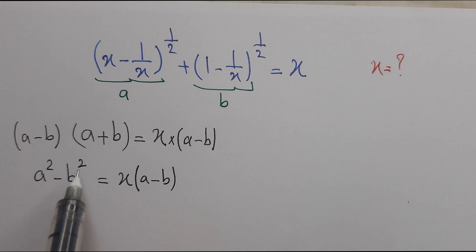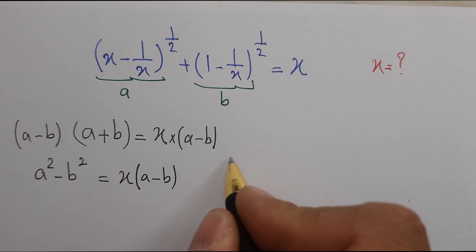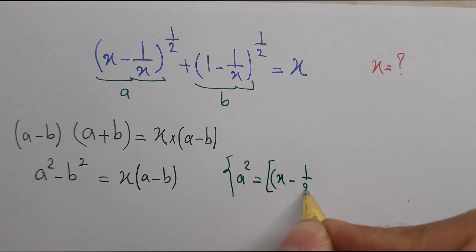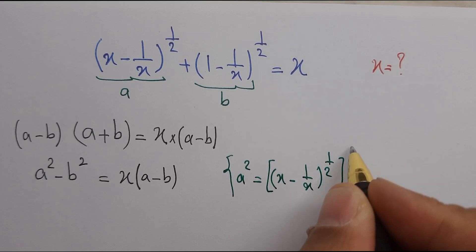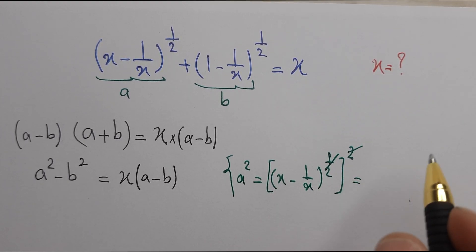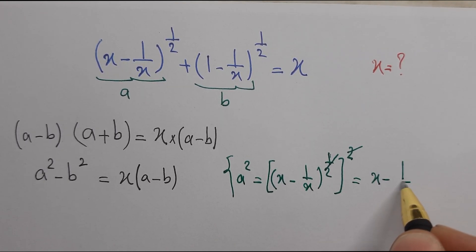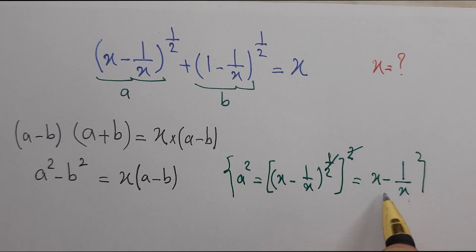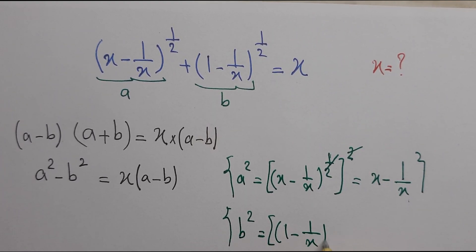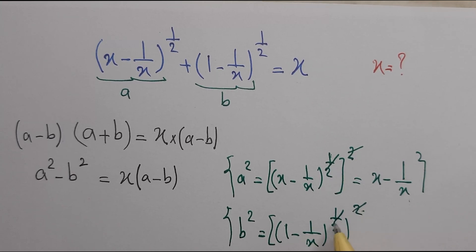We should find a squared and b squared. So a squared: a is x minus 1 over x to the power one half, raised to the power 2. We can multiply the exponents one half and 2, so they cancel out, and we have a squared equals x minus 1 over x. Similarly, b squared equals 1 minus 1 over x.